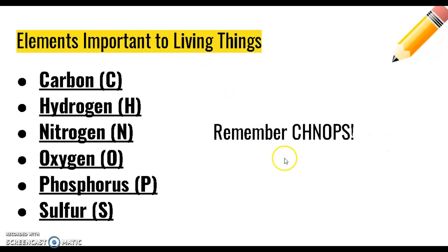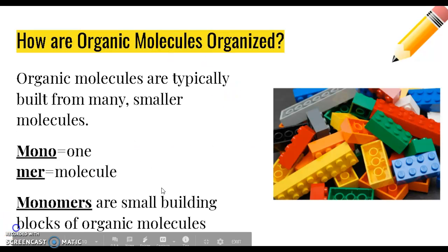How are organic molecules organized? Organic molecules are typically built from many smaller molecules called monomers. Mono means one, mer is molecule, so monomer is one molecule. Monomers are smaller building blocks of organic molecules. I like to make the analogy that these are like Legos. These are small blocks that you can bond together to build much bigger structures.